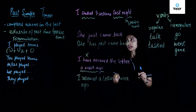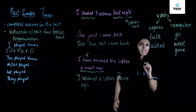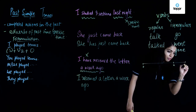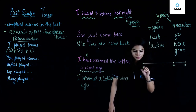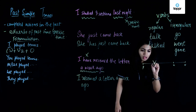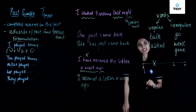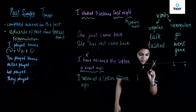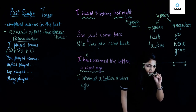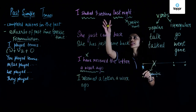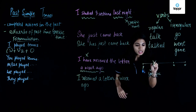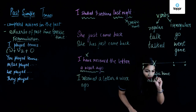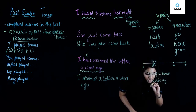Let's look at the timeline of the past simple tense. We have the past, the present, and the future. An action completed in the past with a specific time — that is how we denote the past simple tense on the timeline. For example, 'I studied three sections last night' — 'last night' is the specific time, an adverb of past time.